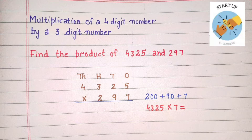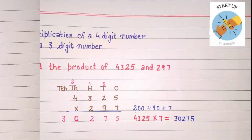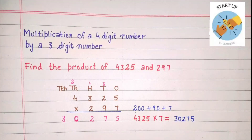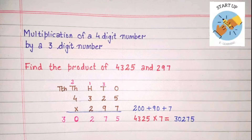First, 7 will be multiplied by the digit at ones place, that is 5. Seven fives are 35. Five will be written under ones place and 3 will be carried to tens place. Now 7 will be multiplied by 2. Seven twos are 14, plus 3 carried over, equals 17.